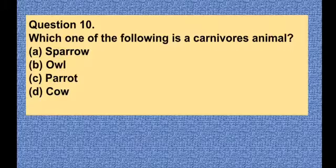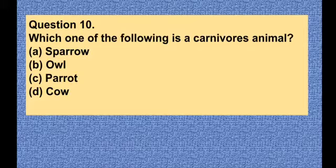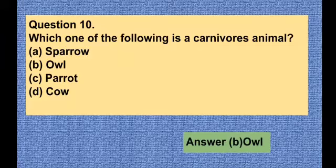Question number ten: Which one of the following is a carnivore animal? Option A sparrow, option B owl, option C parrot, option D cow. The correct answer is option B — owl. Owl is a carnivore animal.